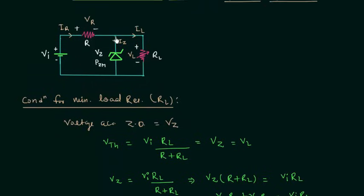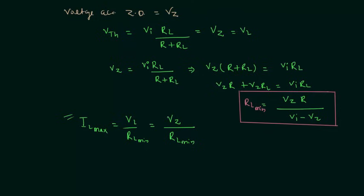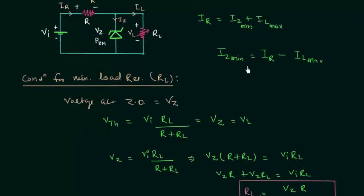Applying Kirchhoff's current law at the node gives IR equal to IZ plus IL. When IL is maximum, IZ will be minimum. So we have minimum Zener current in this condition and we can easily calculate it: IZ minimum equals IR minus IL maximum. IR is simply equal to Vi minus Vz divided by R. So we can easily calculate the minimum Zener current.